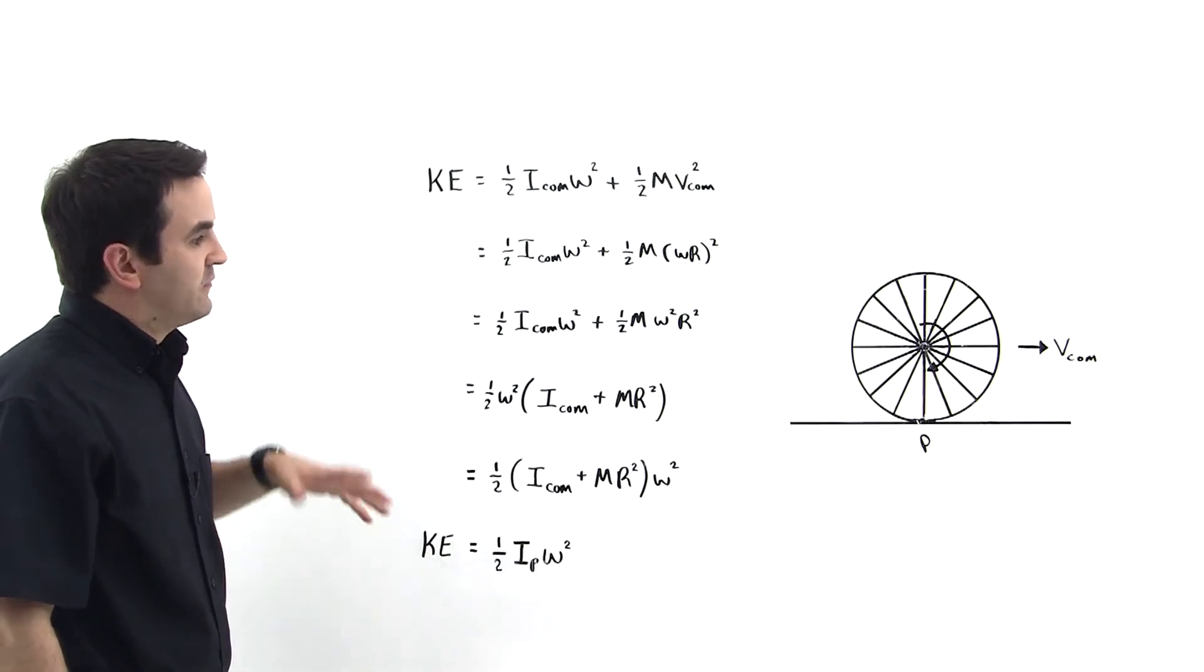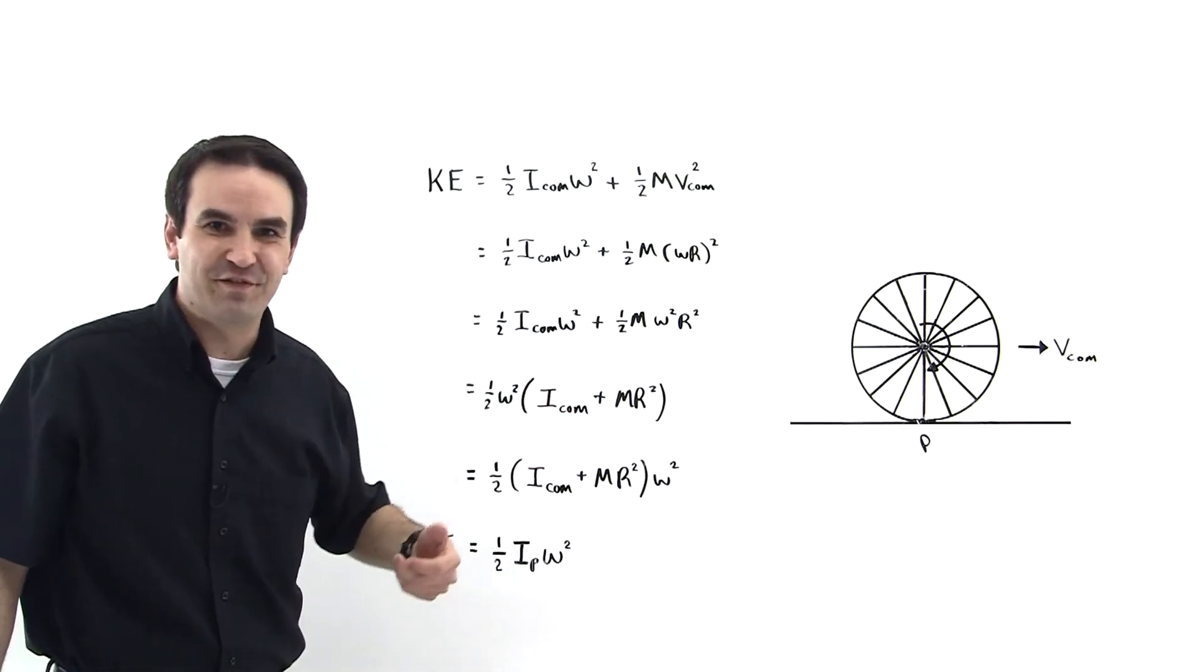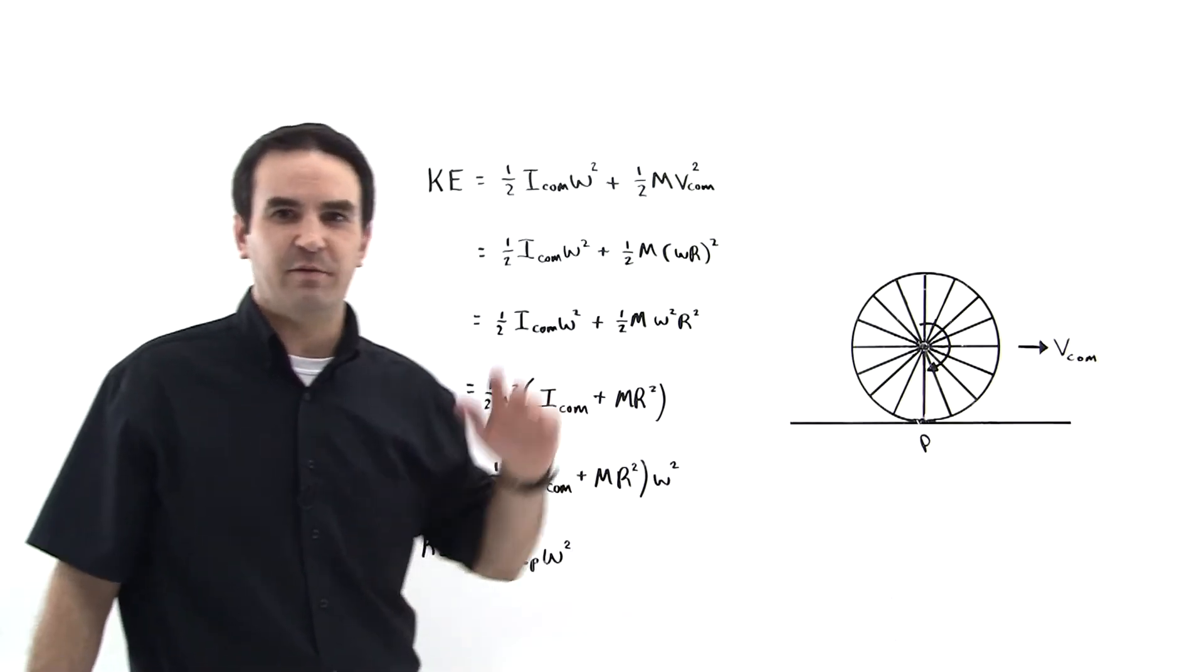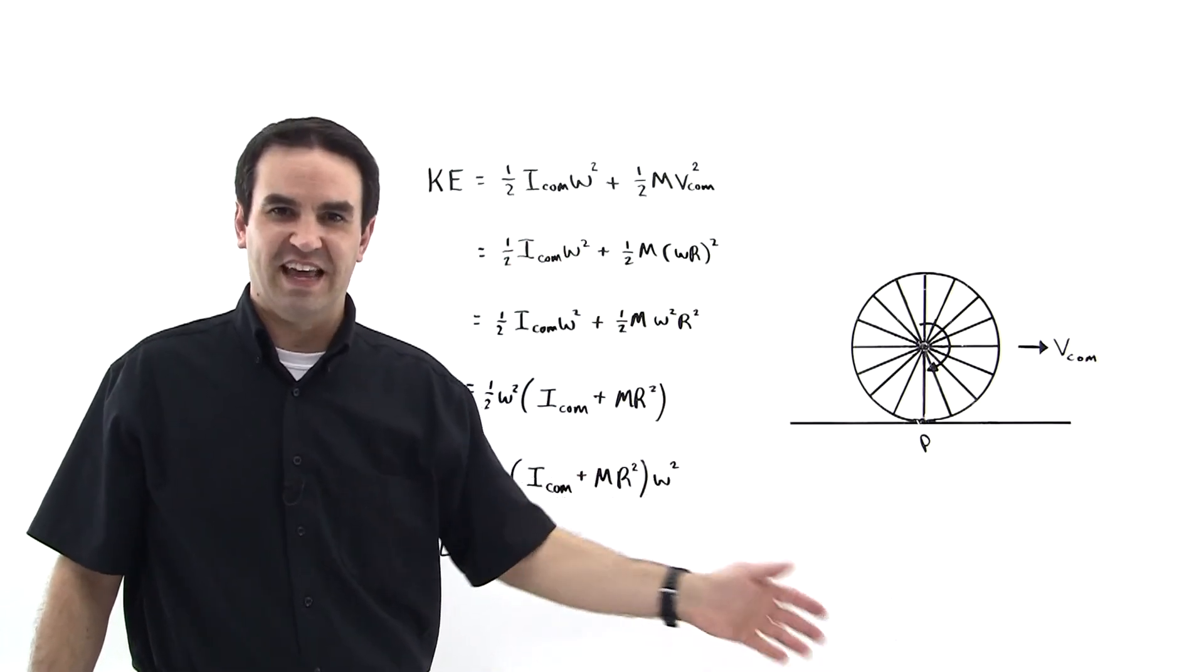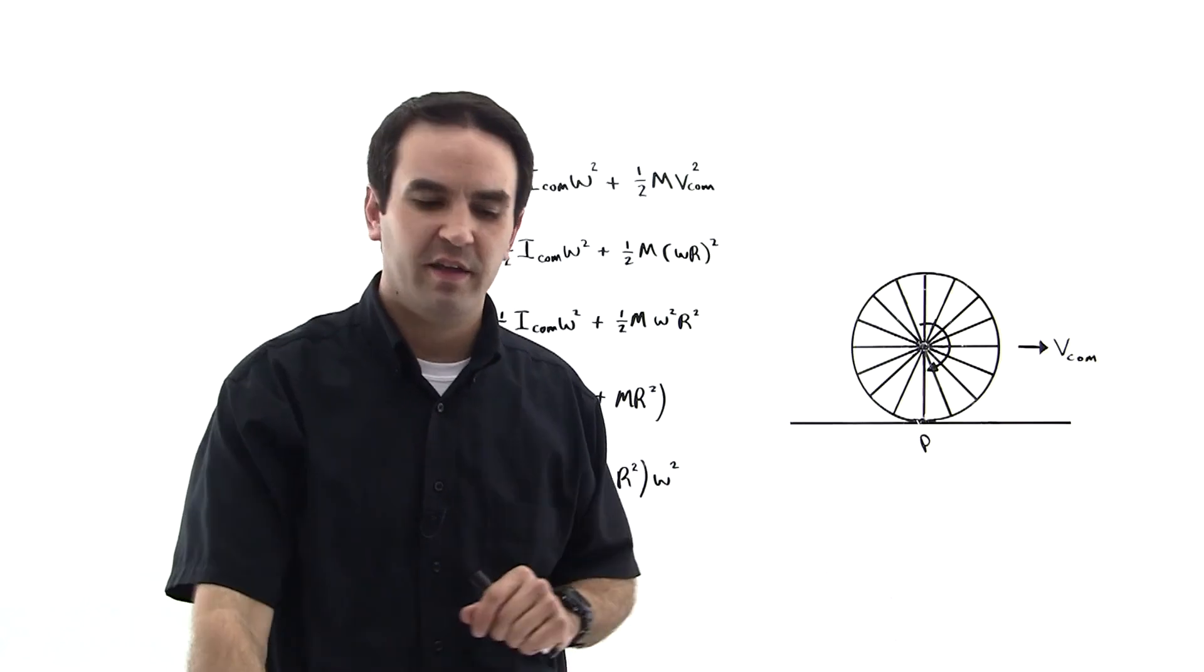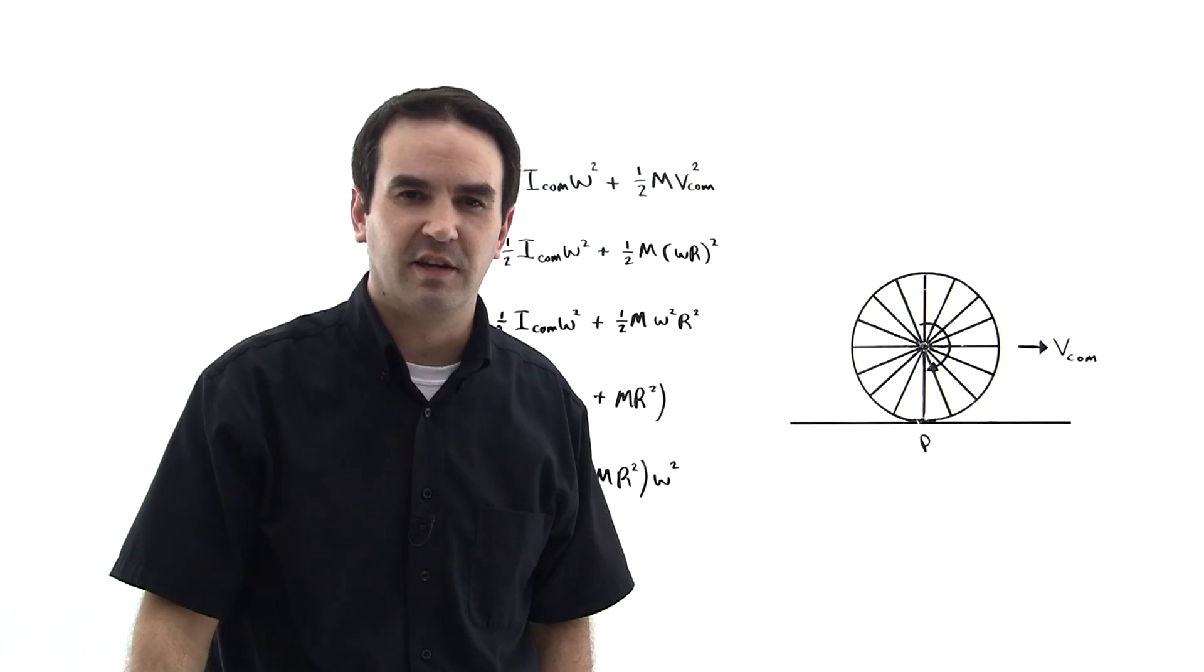This will be useful for taking into account rotational total kinetic energy for rolling wheels as well as for other objects that are rotating about some fixed axis. Most especially the long thin rod will show up on exams and homework. So we'll take a look at that next. See you next time.